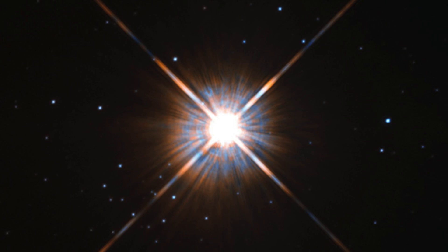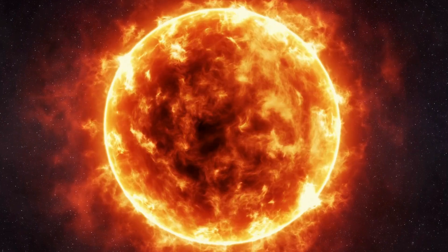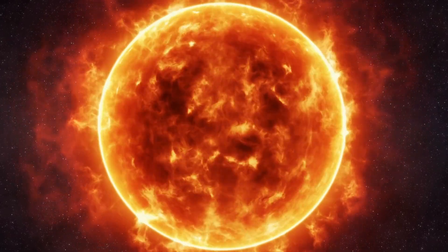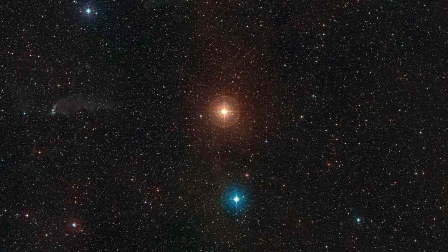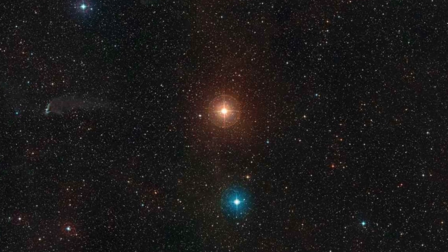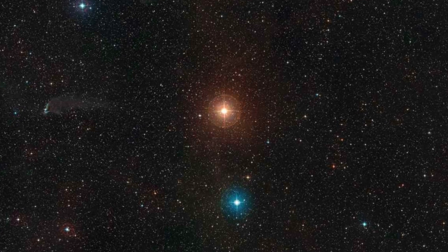Stars are categorized based on their metallicity. Our sun, rich in heavy elements, is a population one star. Methuselah, with fewer heavy elements, is a population two star, indicating its ancient origins.